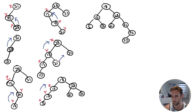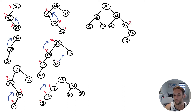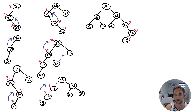Now let's insert 50. It's greater than 18, 28, 31, but less than 55, so we insert 50 as the left child of 55. Going back up: at 55, 1 minus 0 is 1 — balanced. At 31: left subtree is 0, right subtree is 2, so 0 minus 2 is negative 2 — not balanced. So 31 is the first node that's not balanced, we mark that Z. The child with the greatest height is marked Y, and Y's child with the greatest height is 50 — that's X. This is a double rotation: a right rotation then a left rotation.